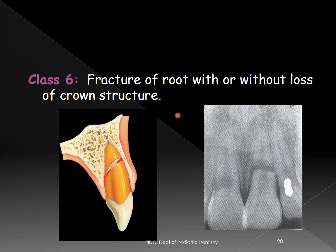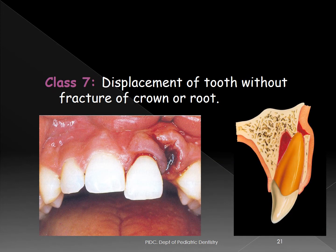Class VI is fracture of the root with or without loss of crown structure. On the radiograph, there is a discontinuity indicating a horizontal root fracture in the middle third. The root is divided into an apical one-third and coronal two-thirds.